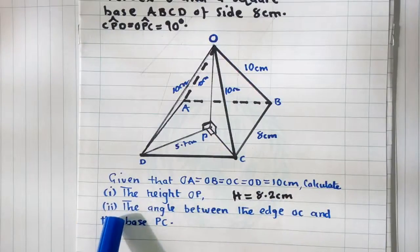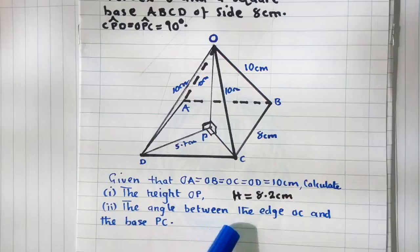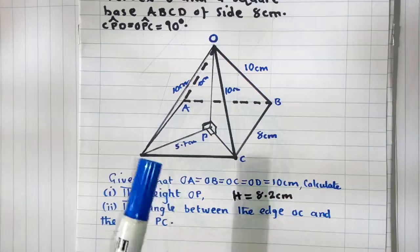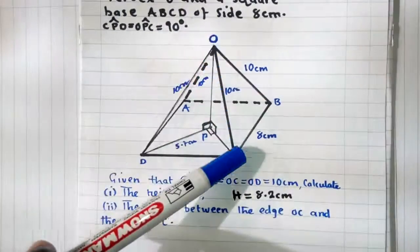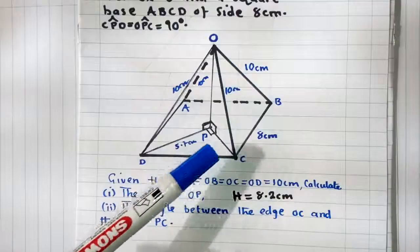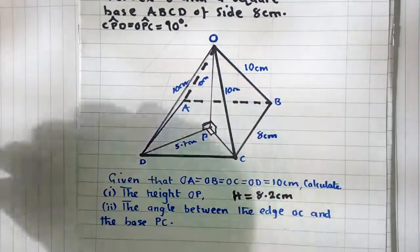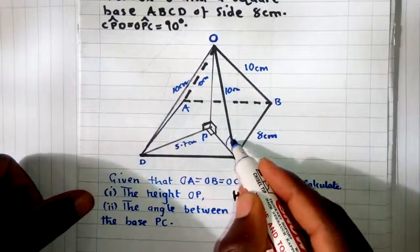And then question two: the angle between the edge OC and base PC. So OC here, and PC is here. So the angle that we are looking for is this one here, this angle we want.